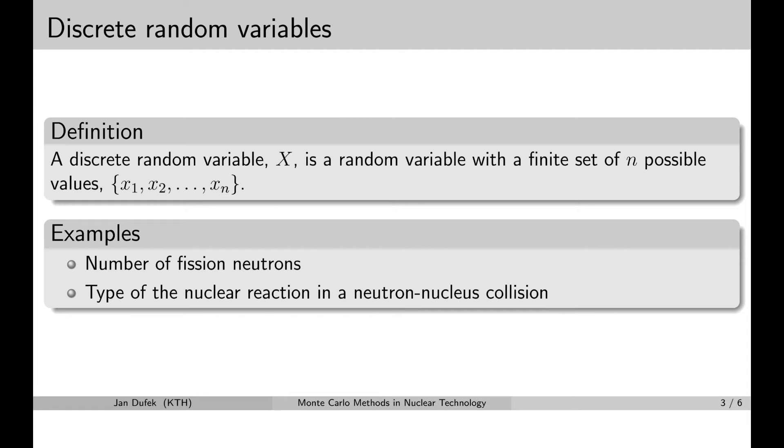I would like to give you an example of a discrete random variable. A typical example would be the number of fission neutrons. Imagine a fission reaction when the nucleus is split into several fission fragments and out of the fission fragments two or three neutrons are released.